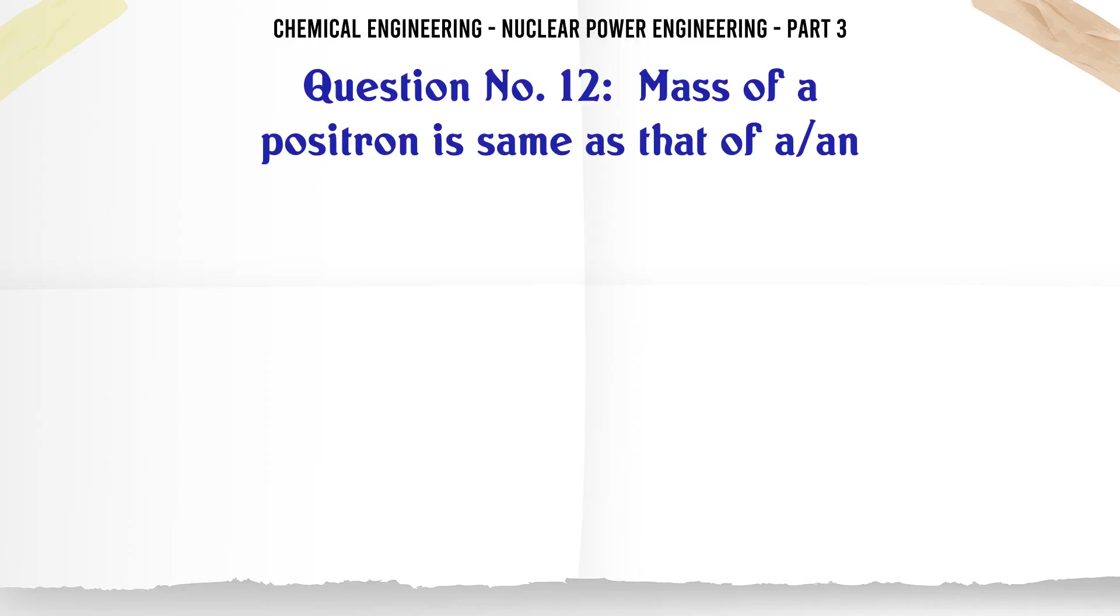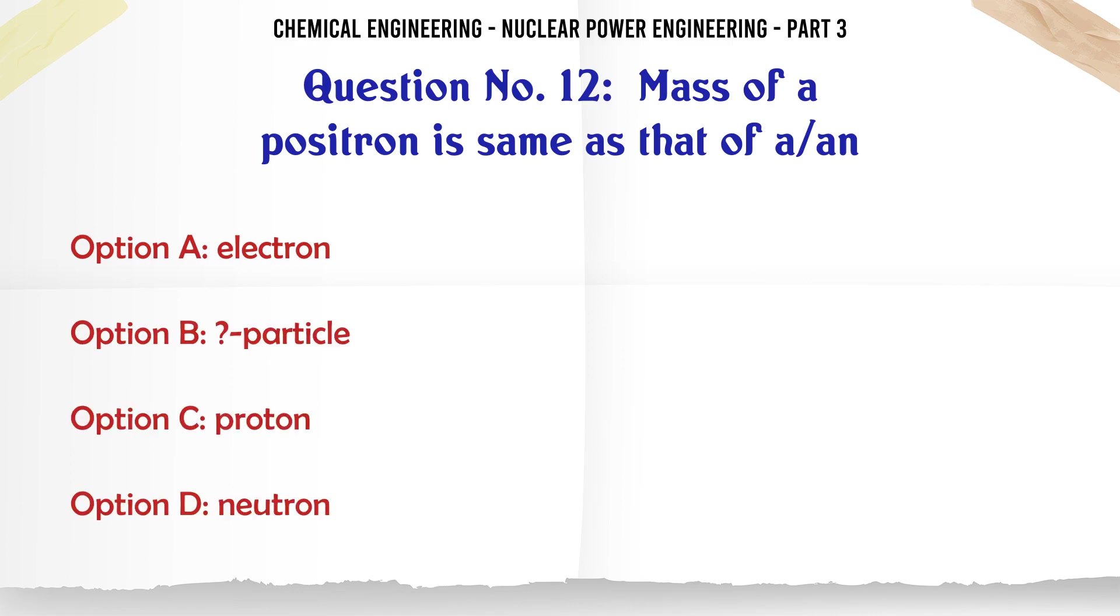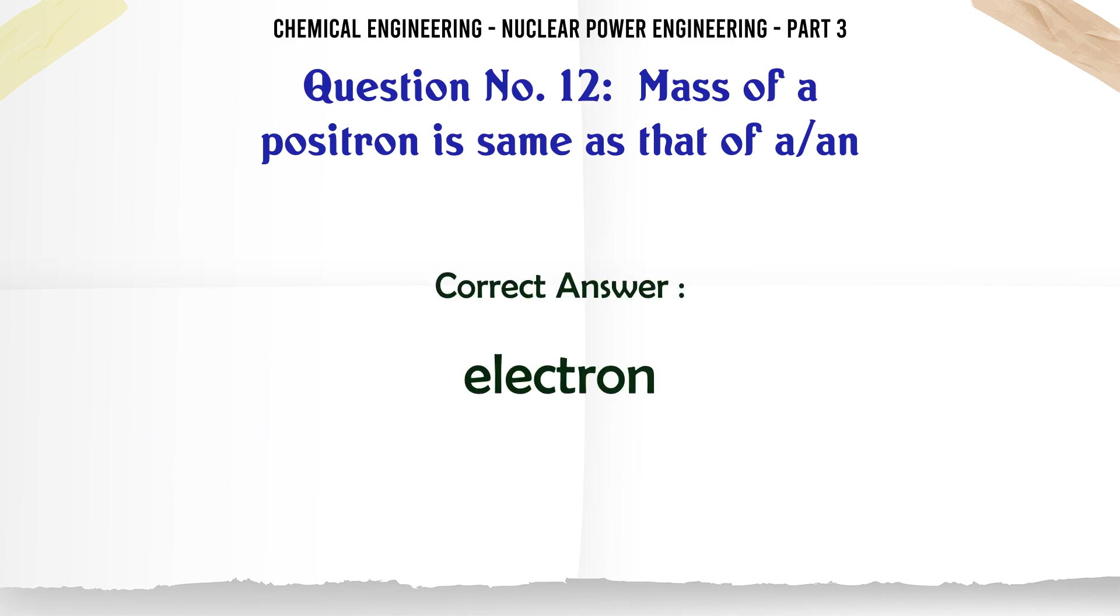Mass of a positron is same as that of an electron. The correct answer is electron.